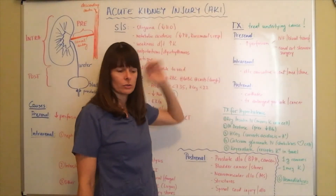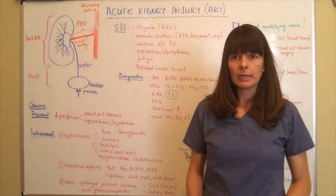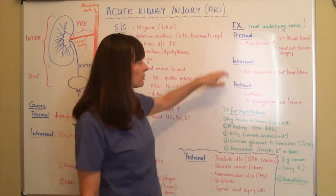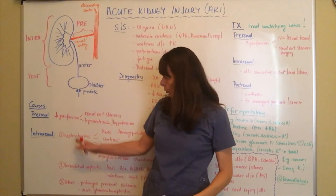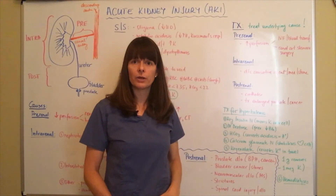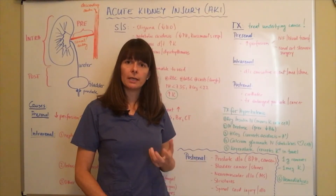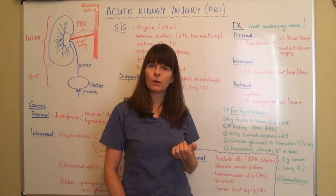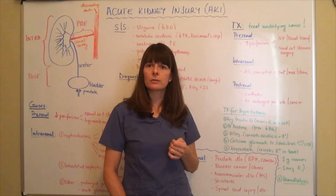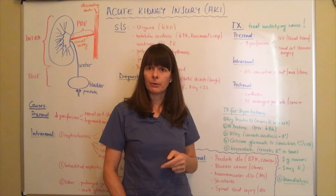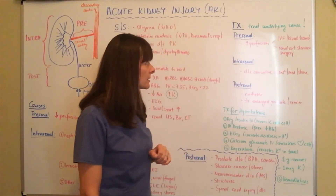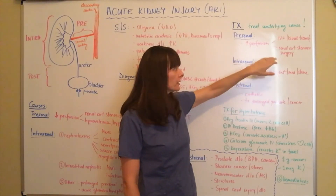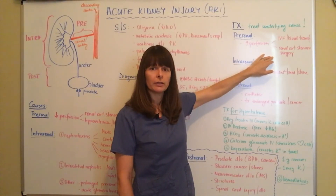Treatment requires addressing the underlying cause. For pre-renal causes with low perfusion, we need to increase perfusion to the kidney. If the patient is severely dehydrated, we need to hydrate them, but be careful — when giving high volumes of isotonic solution for hypovolemia and hypotension, always observe for signs of fluid volume excess such as crackles, peripheral edema, and confusion. If the cause is renal artery stenosis, surgery will likely be needed to fix the narrowed artery.